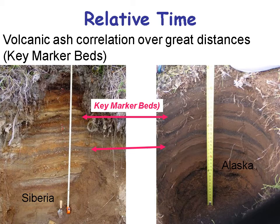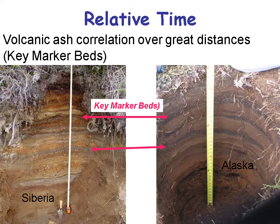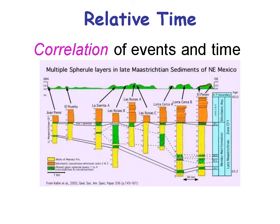Another principle helpful in telling relative age is correlation of volcanic ash over great distances. I was married in 1980, when Mount St. Helens erupted and left a layer of volcanic ash spread all the way to Kansas. We can see those kinds of ash correlations in the geologic record. Here's an example of two ash layers — one in Siberia, another in Alaska — both from the same volcanic event. We can thus correlate events in time across great distances.